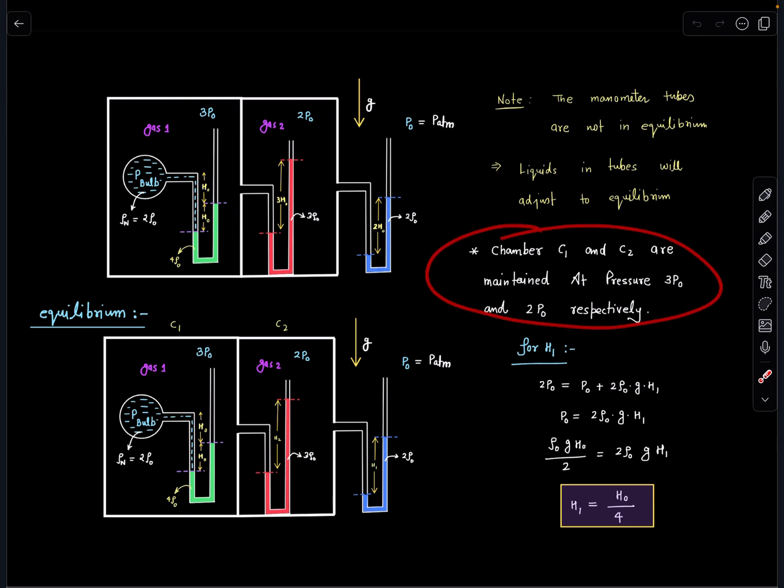Another thing which is given is chamber C1 and chamber C2 are maintained at pressure 3p naught and 2p naught respectively. That means we have to assume that these pressures are not changing. So here I am saying the new height is h1 here and h2 here.